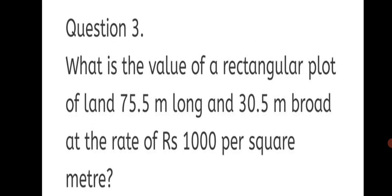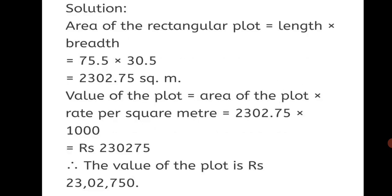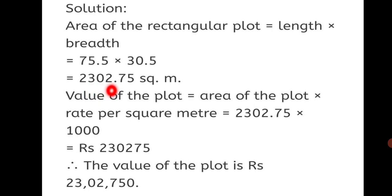Question 3. What is the value of a rectangular plot of land 75.5 meter long and 30.5 meter broad at the rate of rupees 1000 per square meter? First we find the area of the rectangle, then multiply it by 1000 to find the cost. Area of rectangular plot equals length into breadth: 75.5 meter into 30.5 meter, which gives 2,302.75 square meter.